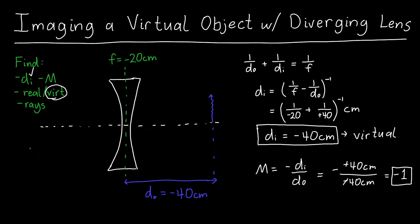Now for the ray tracing I need at least two rays, and I'll choose my two favorites for this situation. The first is a ray that passes straight through the center of the lens, because those rays don't get disturbed — they don't change their path. It's going to come from somewhere and go to my virtual object.